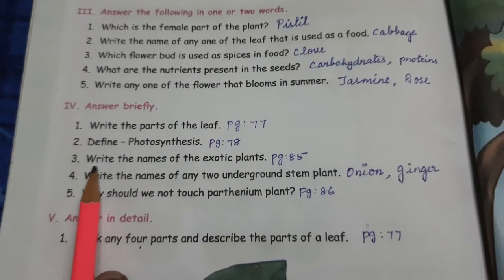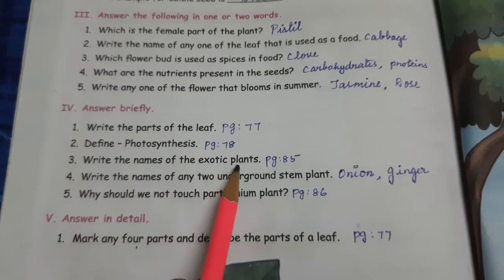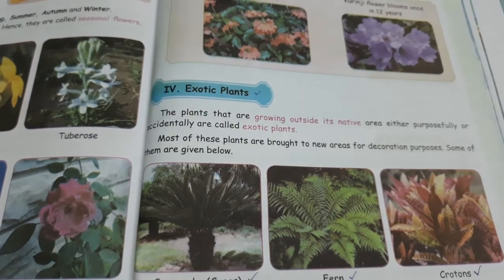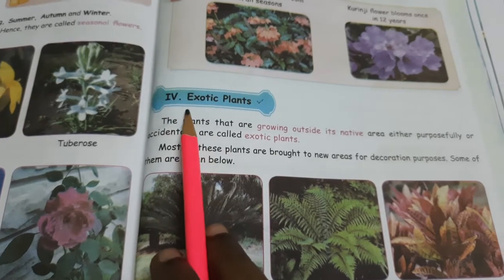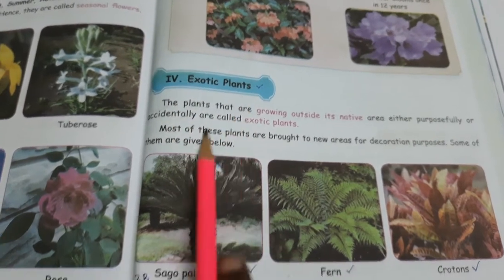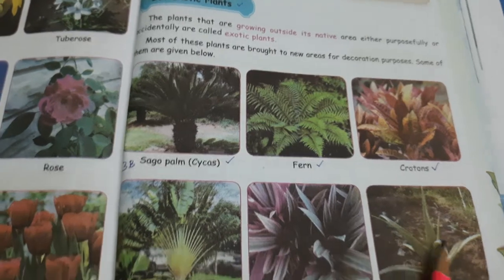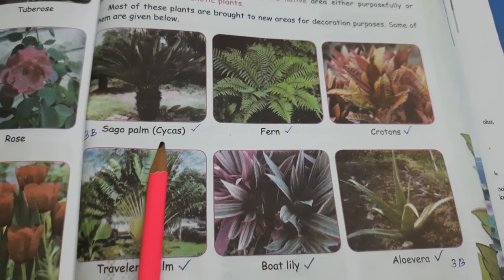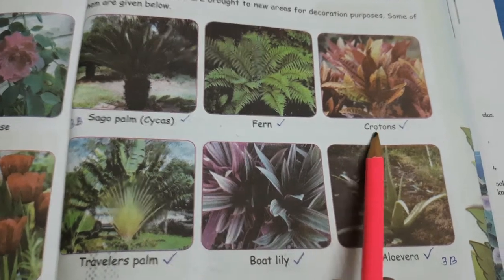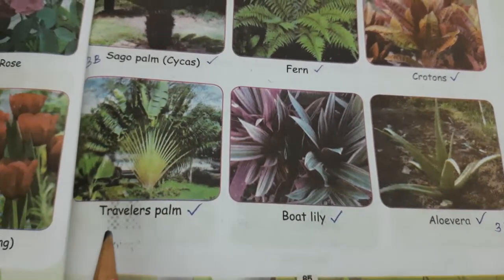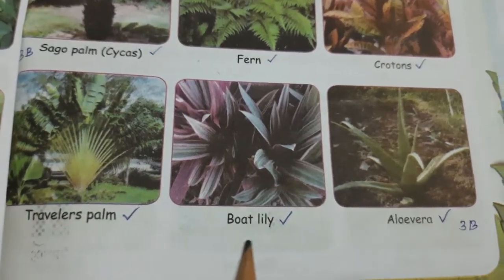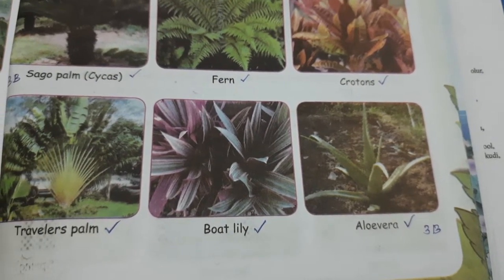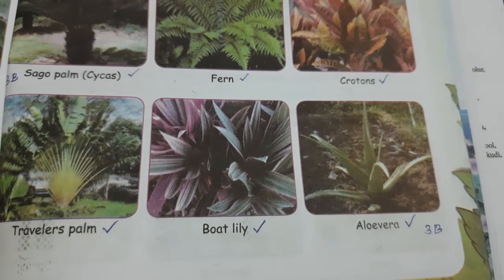Third question: write the names of the exotic plants. This answer is on page number 85. The six exotic plant names are: sago palm, fern, crotons, travellers palm, boat lily, and aloe vera.